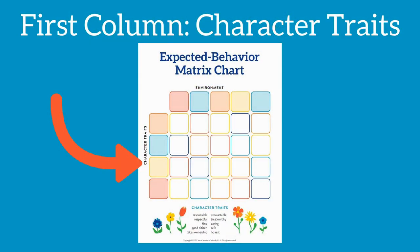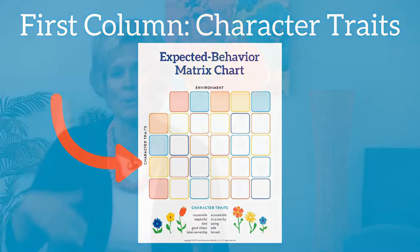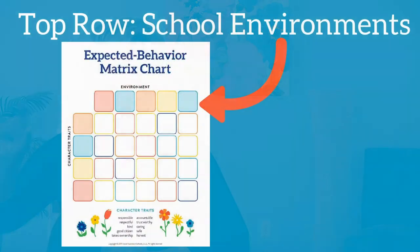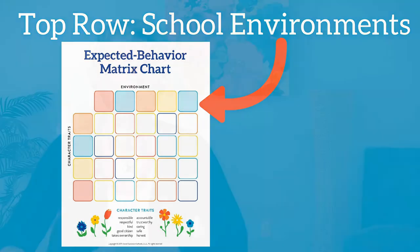In the first column, you'll want to fill the boxes with the character traits you've chosen for your school, such as the popular Be Respectful, Be Safe, Be Responsible. Next, you'll want to fill in the top row with the various environments in your school, such as bus, hallway, cafeteria, recess, bathroom, and classroom.